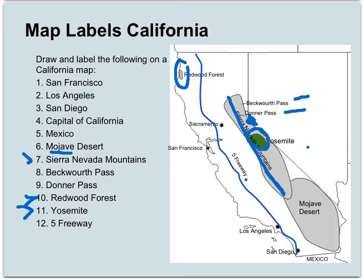Yosemite is an amazing place to visit that has great rock formations and waterfalls — I'm sure some of you have been there. The last thing I want you to be able to find is the Five Freeway.